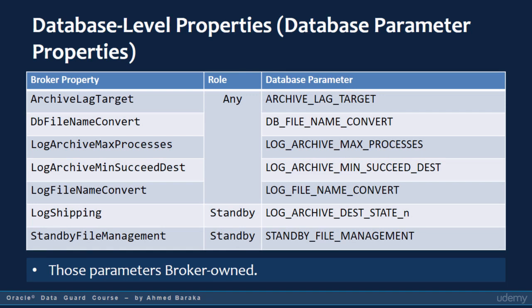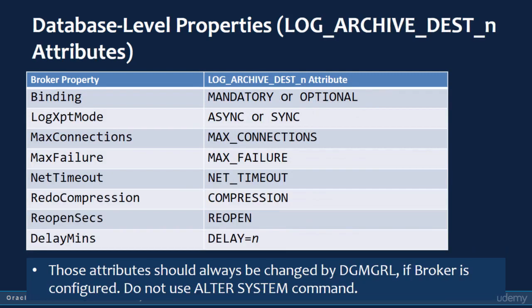The slide shows a list of broker properties and their corresponding database parameters. In this table you see broker properties that modify the log archive destination attributes. For example, if you want to set the redo transport service to use synchronous method when shipping redo log files to the standby database — where the log archive destination parameter is oradb_s2 — in the DGMGRL command prompt you would issue: EDIT DATABASE oradb_s2 SET PROPERTY LogXptMode = SYNC. This command will change the attribute of the log archive destination parameter.